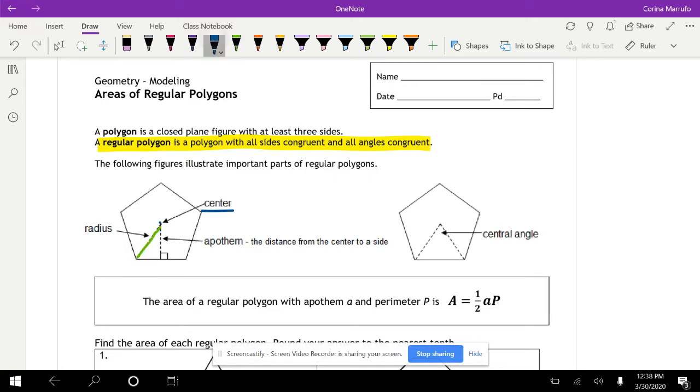Just like a circle has a radius, the polygon also has a radius. And the radius goes from the center to the vertex. Then we have the apothem. The apothem is the distance from the center to one of the sides.